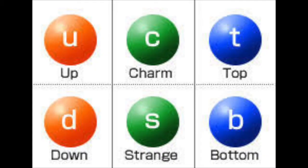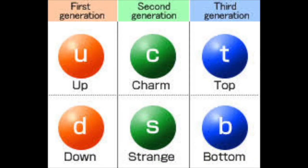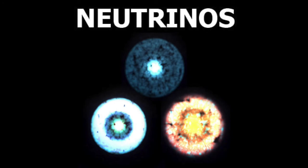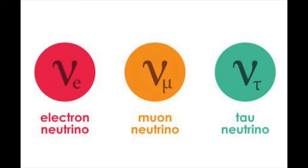Remember that there are six different flavors of quarks, with two flavors per generation? Neutrinos have it similarly, but it's more simple. There are three different flavors of neutrinos, and it's basically the lepton names. From here on, it should be fairly straightforward. The electron neutrino goes with the electron, the muon neutrino with the muon, and the tau neutrino with the tau.